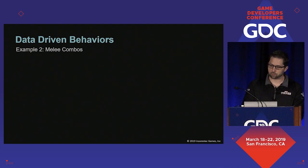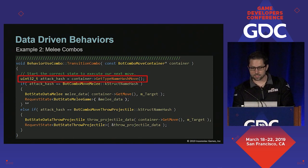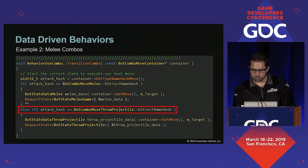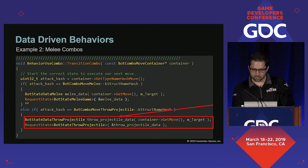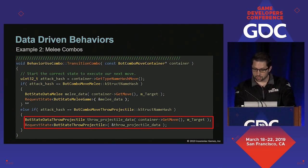The relevant code happens once behavior use combo has determined that it is in position and ready to execute an attack. It calls a transition combo function. This function takes the move container and retrieves some metadata about the type of combo move that it contains. If it's a melee move, we prep some state data and start a melee attack. Or if it's a throw projectile move, we prep some different state data and start a throw projectile state. In the full version of this function, this if-else cascades for the other 37 combo move types that we have.